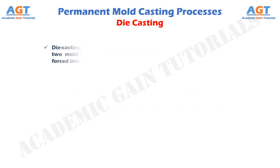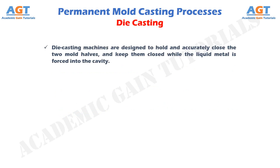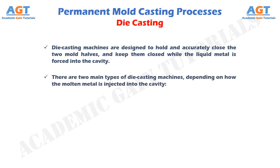Die casting machines are designed to hold and accurately close the two mold halves and keep them closed while the liquid metal is forced into the cavity. There are two main types of die casting machines depending on how the molten metal is injected into the cavity: hot chamber and cold chamber.